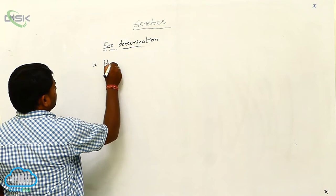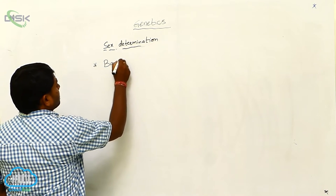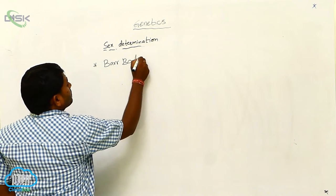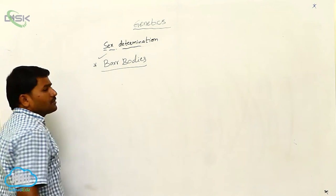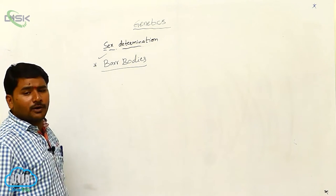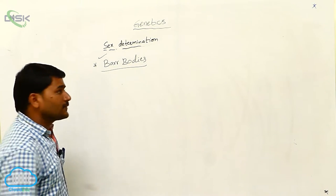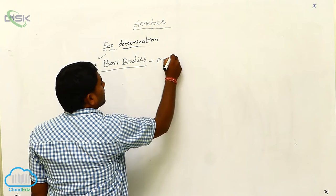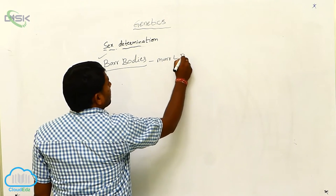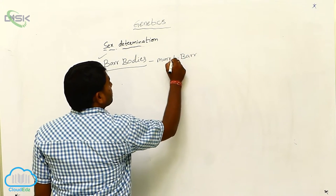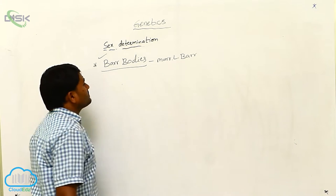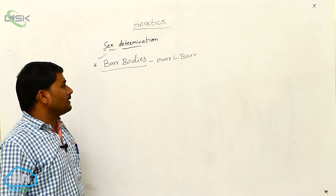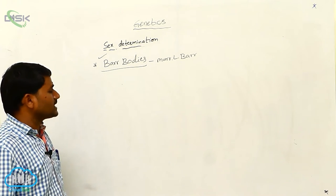Bar bodies were first identified by Murray L. Bar scientists. Who observed bar bodies for the first time? Murray L. Bar scientists.